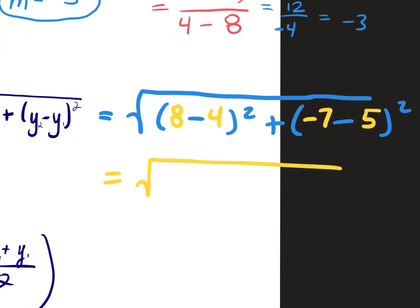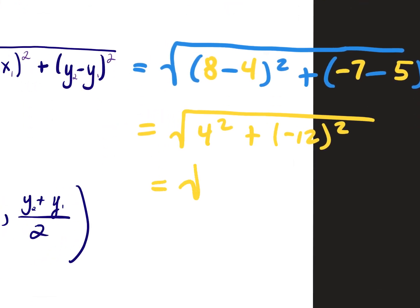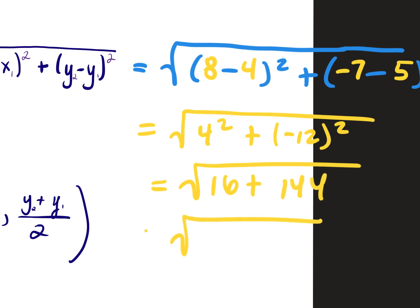So I'll say 8 minus 4 and negative 7 minus 5. Let's simplify: 8 minus 4 is 4, squared. Negative 7 minus 5 is negative 12, squared. We should understand we're never going to get a negative number underneath this radical — distance is always a positive number. What's 4 squared? 16. What's negative 12 squared? 144. So I have the square root of 16 plus 144, which is the square root of 160.